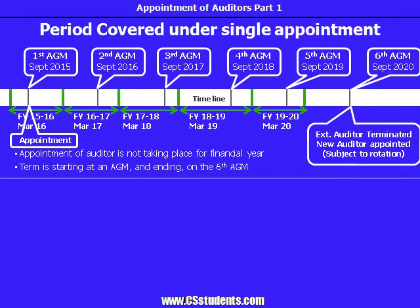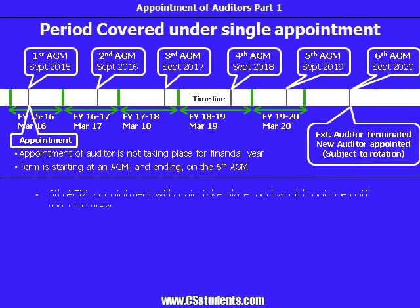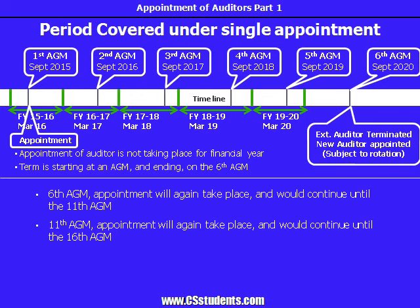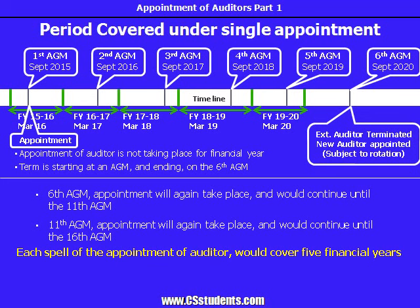So under the New Companies Act, a single appointment of an auditor will cover a spell of five financial years. Then in the sixth AGM, the appointment will again take place and would continue in effect until the eleventh AGM. In the eleventh AGM, appointment will again take place and would be effective until the sixteenth AGM. Each spell of the appointment of auditor would cover five financial years.